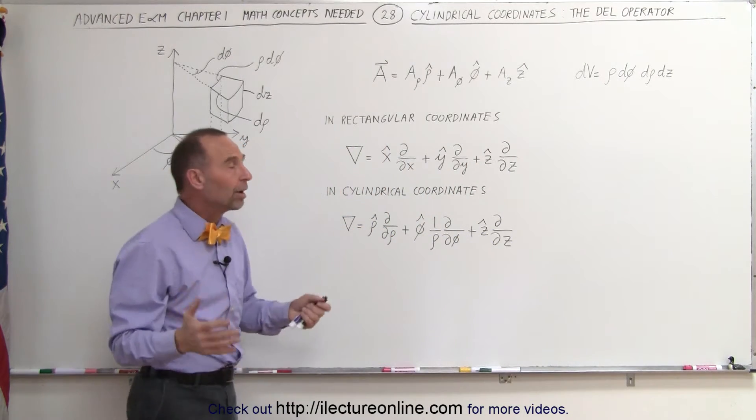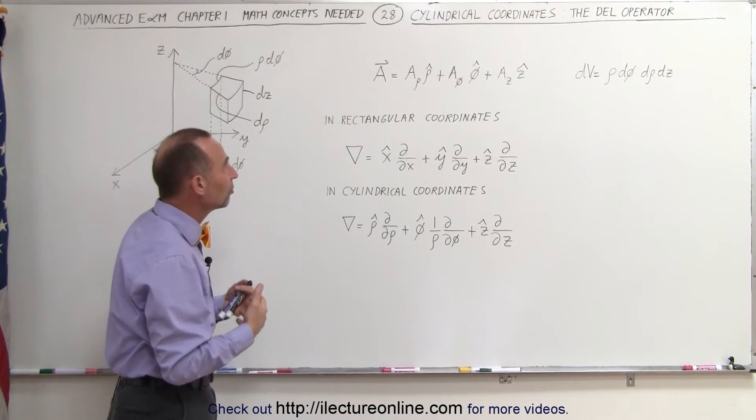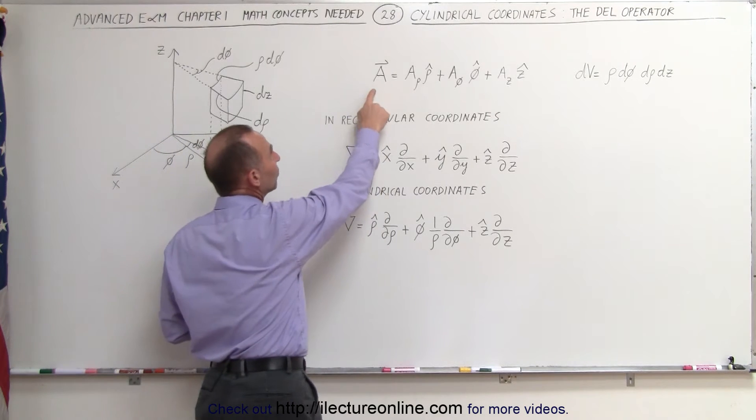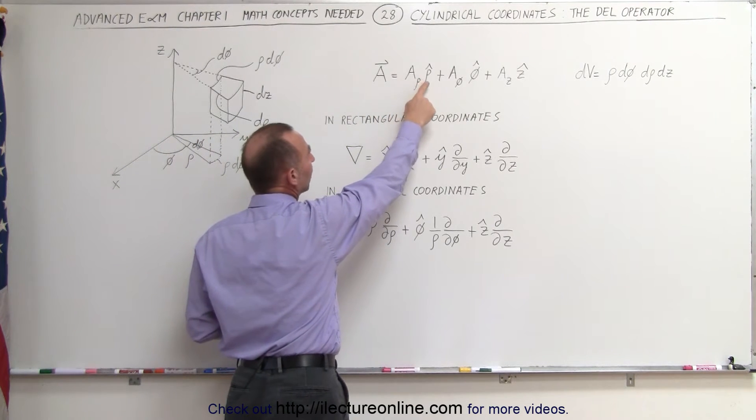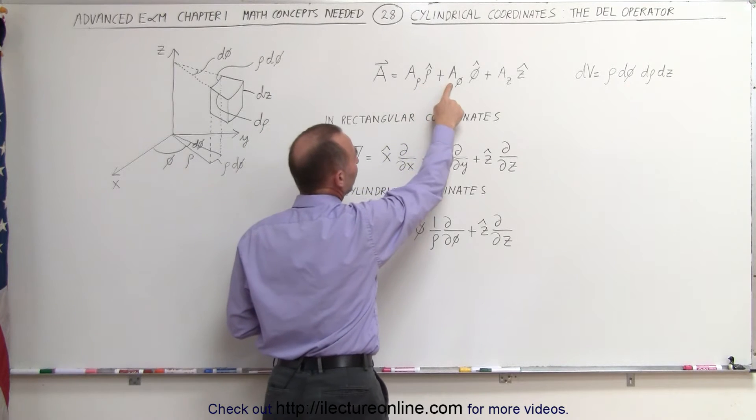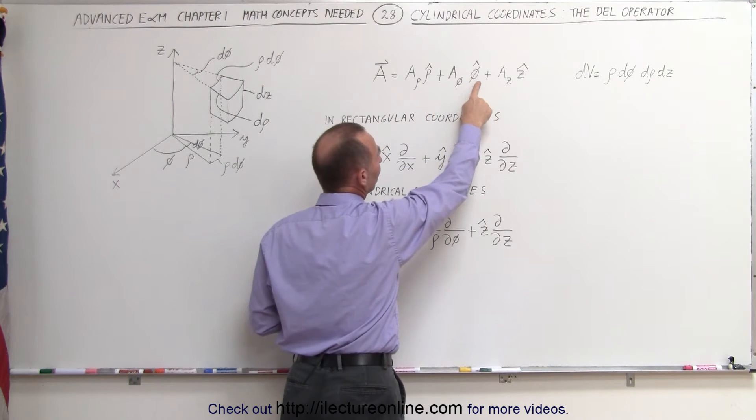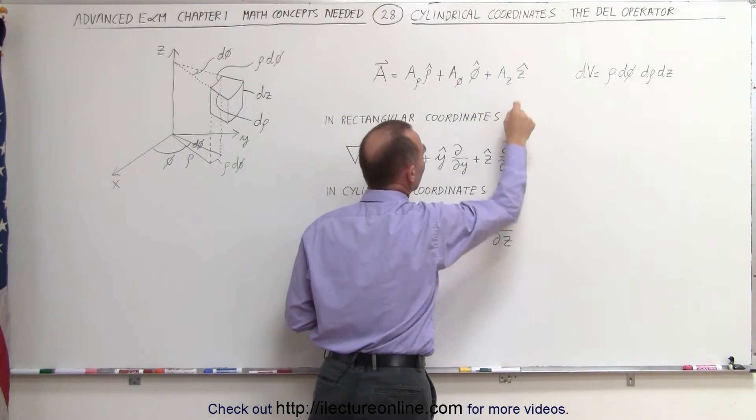Also if we want to express a vector quantity in cylindrical coordinates we can say that A is equal to the rho component times the rho unit vector plus the phi component times the phi unit vector plus the z component times the z unit vector.